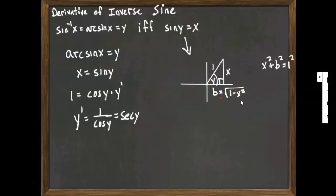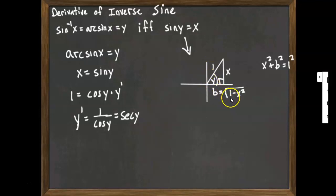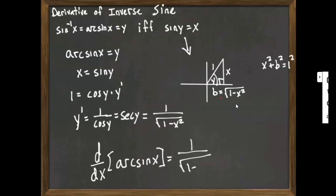Now that we have b, we can compute cosine of y or secant y. Cosine is adjacent over hypotenuse. Secant, being the reciprocal of cosine, would be 1 — the hypotenuse — over the square root of 1 minus x squared. Putting in secant y, that would be the hypotenuse 1 over the adjacent, square root of 1 minus x squared. So the derivative of arc sine is 1 over the square root of 1 minus x squared.